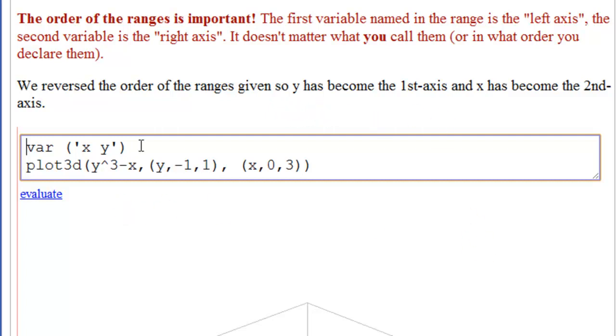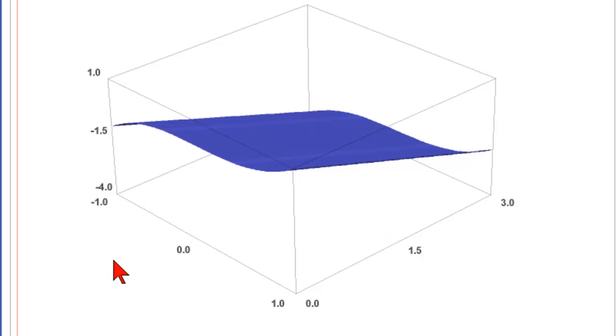So here we have declared x and then y. Here we have the same function y cubed minus x. And what we did was we reversed the position of these two things. And now the plot has been inverted. Here's what was y is now x. What was x is now on the y axis. So be careful of the order in which you write the ranges. Because the first one will go on the left or x axis. And the second one will go on the right or y axis.